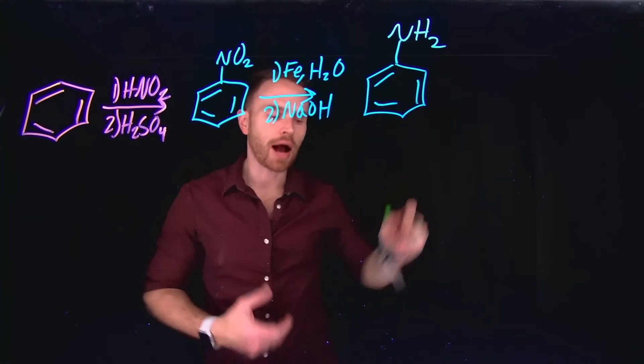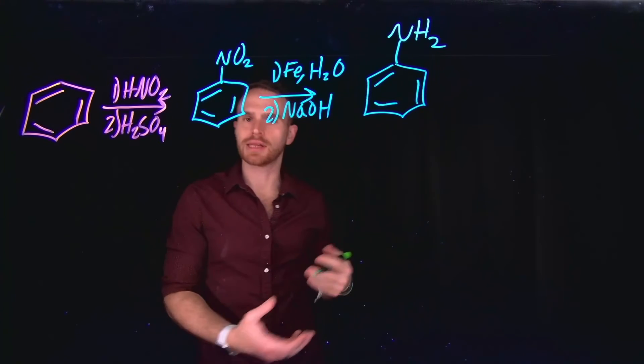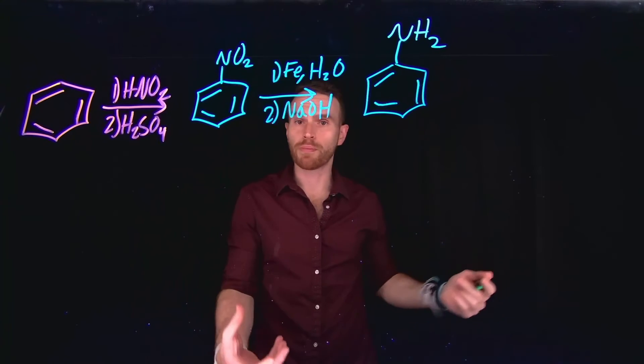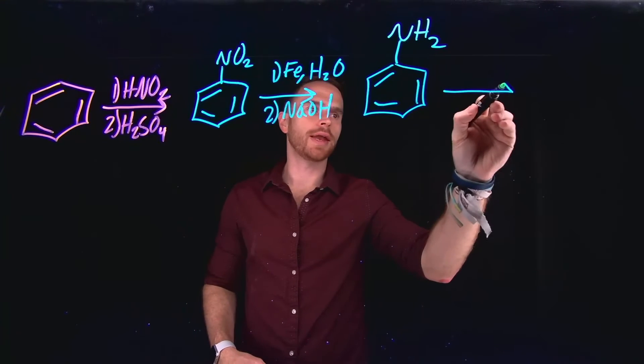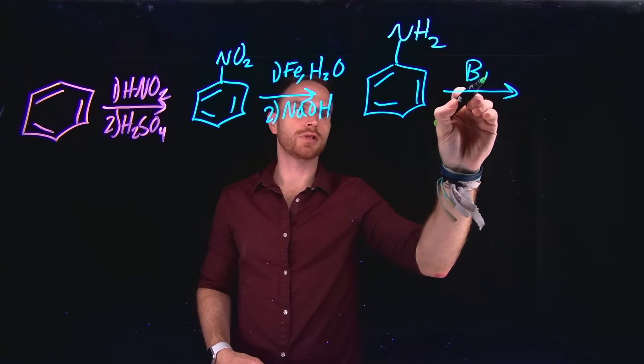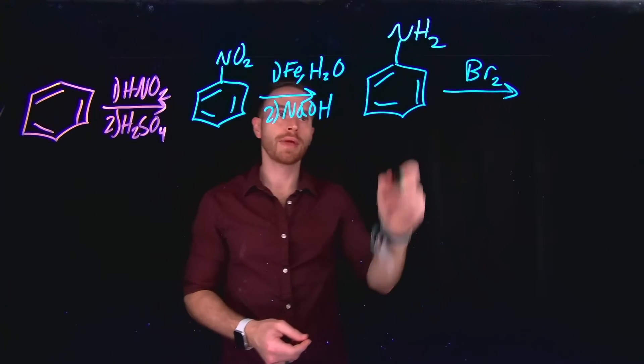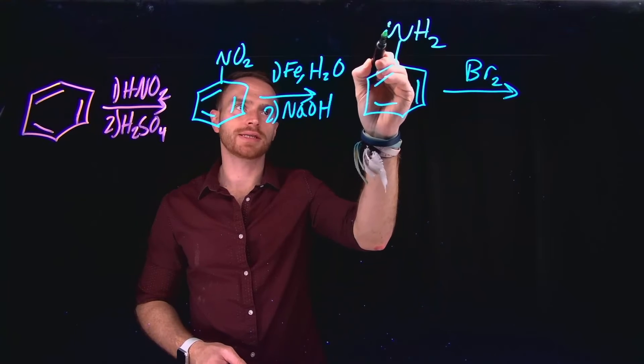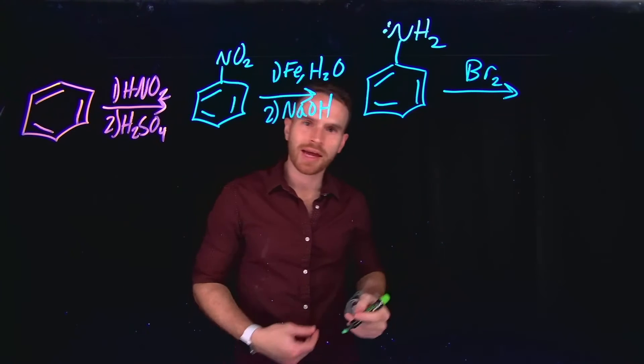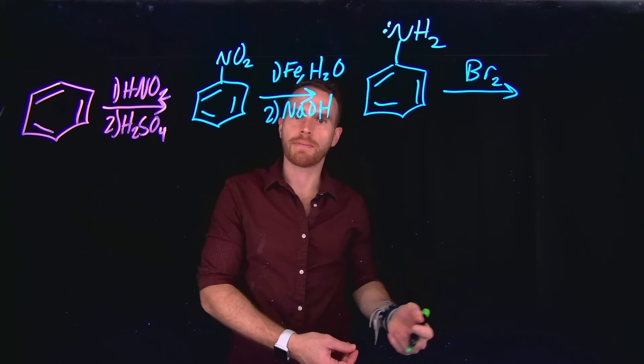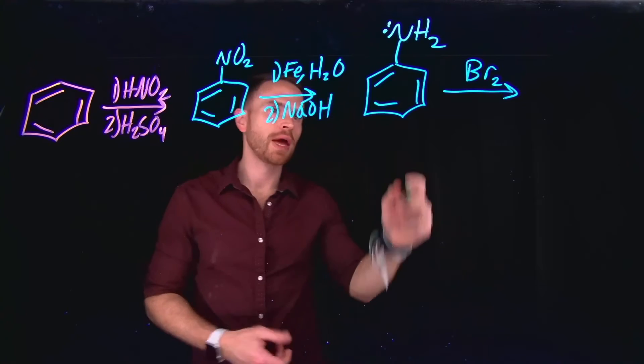And from here, I can do a multitude of different reactions. And let's say, for example, that I wanted to do a bromination. I know that if I add bromine, that I can do an electrophilic aromatic substitution to add bromine to this molecule. I can consider the fact that since nitrogen has a lone pair, it's going to be pi donating. This is going to make it an ortho-para director.